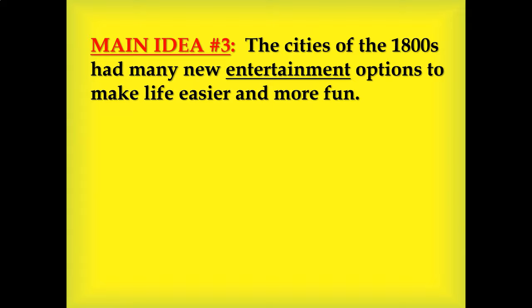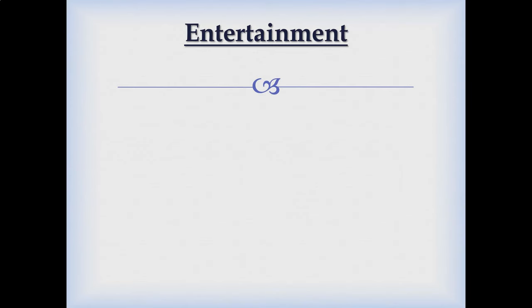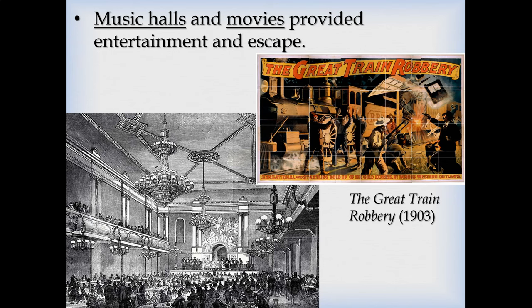Now let's look at entertainment in the 1800s in the cities. One activity was going to the local music hall — basically a big auditorium where music was played, plays were performed, magicians came through, and comedy acts performed. If you weren't going to the music hall, you might check out the movies. Thomas Edison's team came up with a motion picture camera in the late 1800s, and by the early 1900s we had full-fledged silent films. Originally they only lasted a minute or two, but eventually films had actual plots, special effects, and more. People really enjoyed this because it was cheap entertainment.